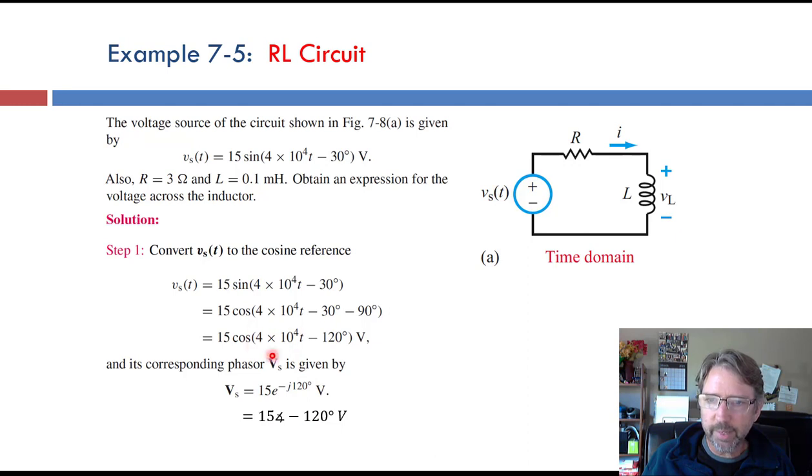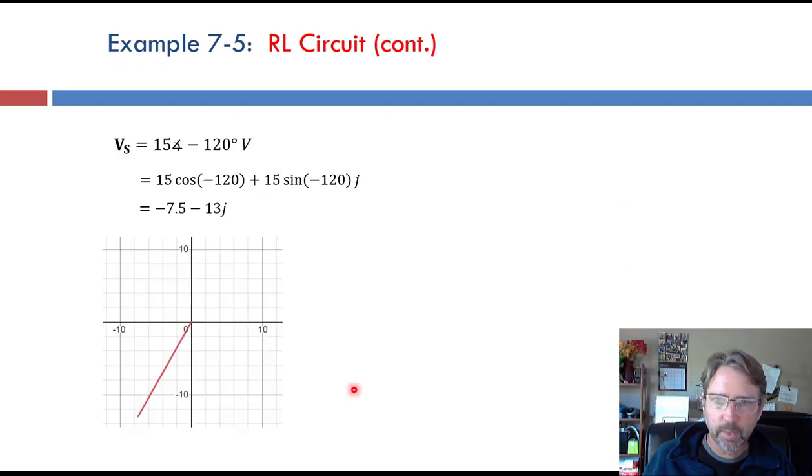And we do have to remember what omega is, because that's going to come up in the impedance calculations. This is just one other way to look at the phasor for the voltage, 15 with a phase of negative 120 degrees. This is the polar form, so we would go out 15 and then rotate negative 120 until we get to there.